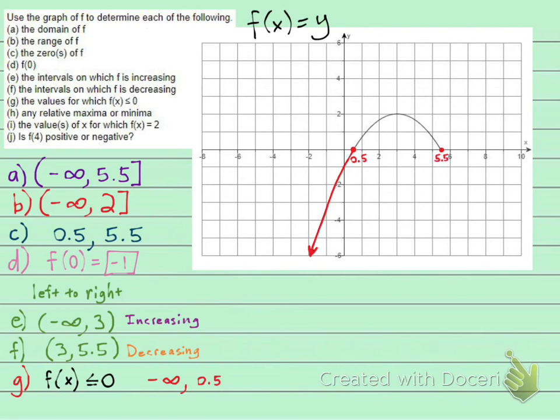So we have an interval to the left. Everything from negative infinity to 0.5. And we also have this point of 5.5.